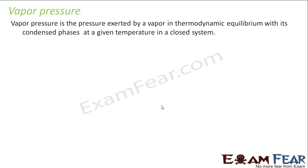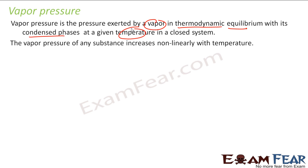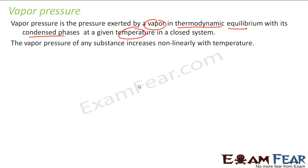The formal definition of vapor pressure: it is nothing but the pressure exerted by vapor in thermodynamic equilibrium with its condensed phase at a given temperature. Vapor pressure is temperature dependent. If we increase the temperature, the vapor pressure will change. Notably, the vapor pressure of any substance increases non-linearly with temperature — this has been found experimentally.